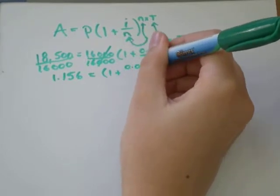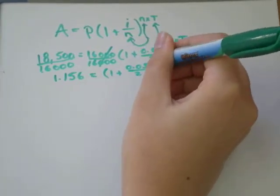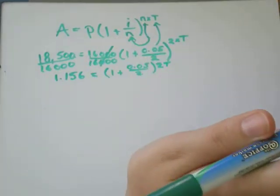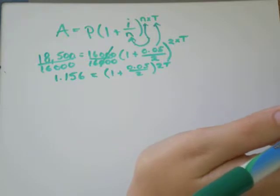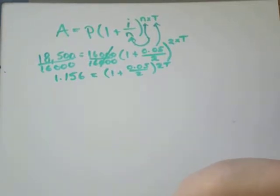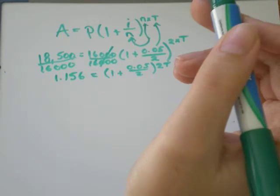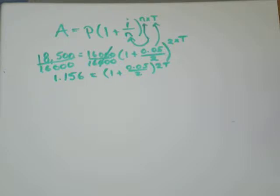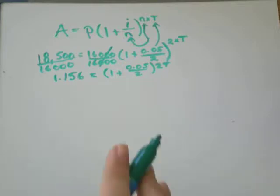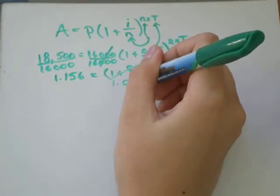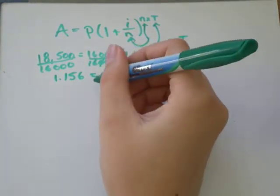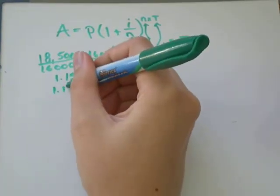1 plus 0.05 over 2 to the power of 2 times t. I'm going to write that as 2t, just make it look a little bit nicer without the multiplication sign in between. So I think what I'll do now is simplify what's in the brackets. 0.05 divided by 2 is 0.025 plus 1 would be 1.025. So it's 1.025 to the exponent of 2t is equal to 1.156.